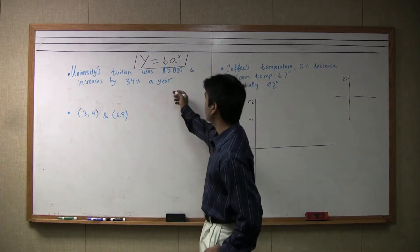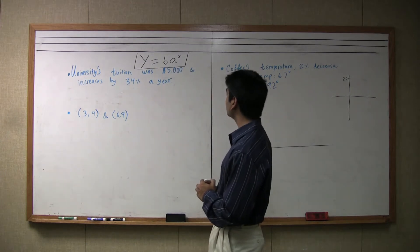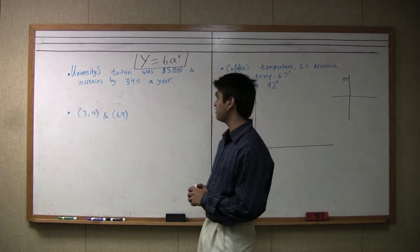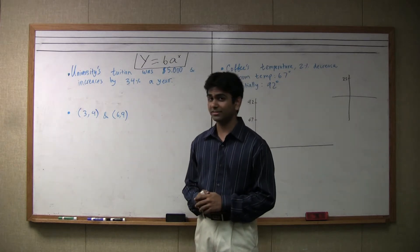So let's start with this one. Let's say that the university's tuition was $5,000 initially, and that increases by 34% a year. What does this mean?